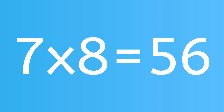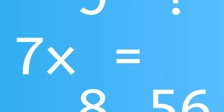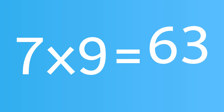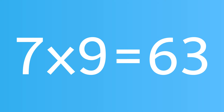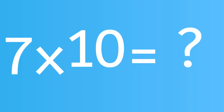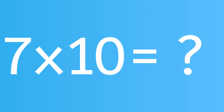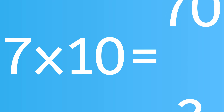Now, let's add another 7 to get the answer to 7 times 9. Did you guess 63? What's 7 times 10? This one's easy — count by 10s if you need to. Yes, it's 70.